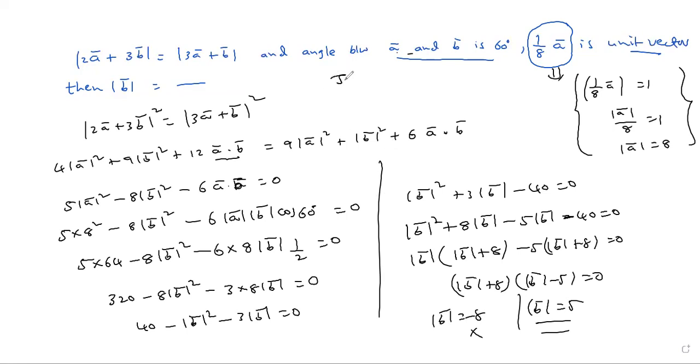This question from JEE Main 2021, first shift. Very easy questions. Just practice well. Mod B equals 5 is C option. So clearly you can write answer as C. Options are there, easy to check. Good question, easy question. So prepare well. If you have any doubt, you can ask.